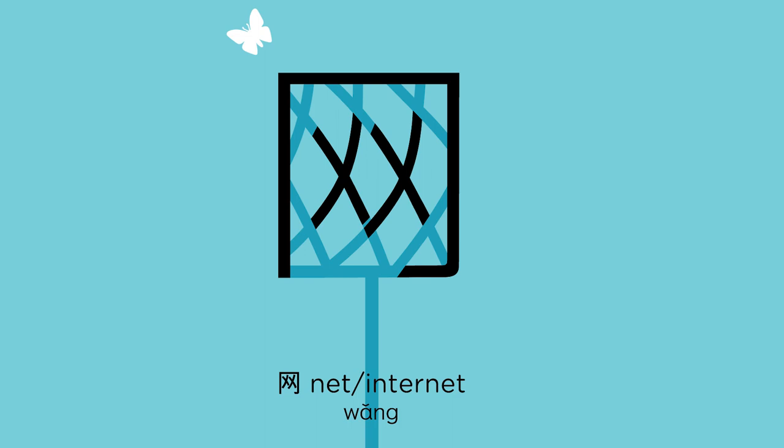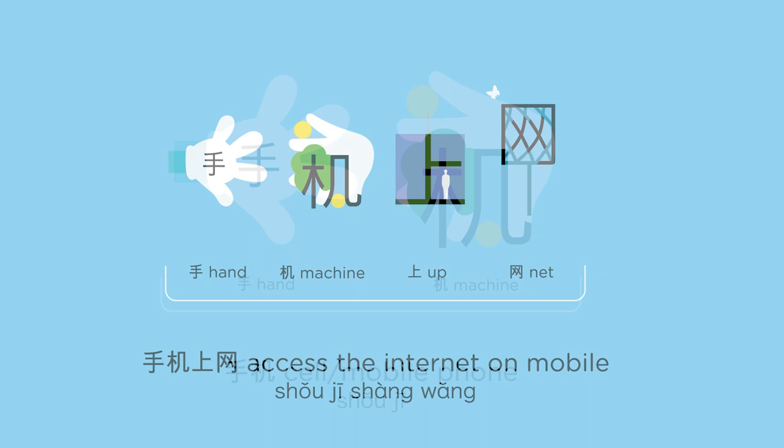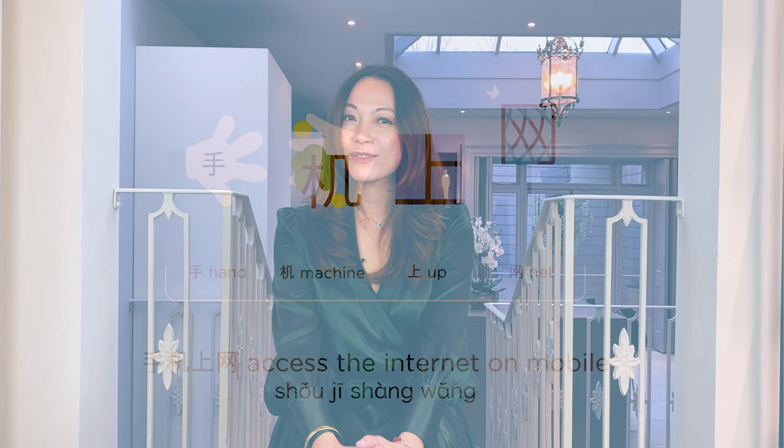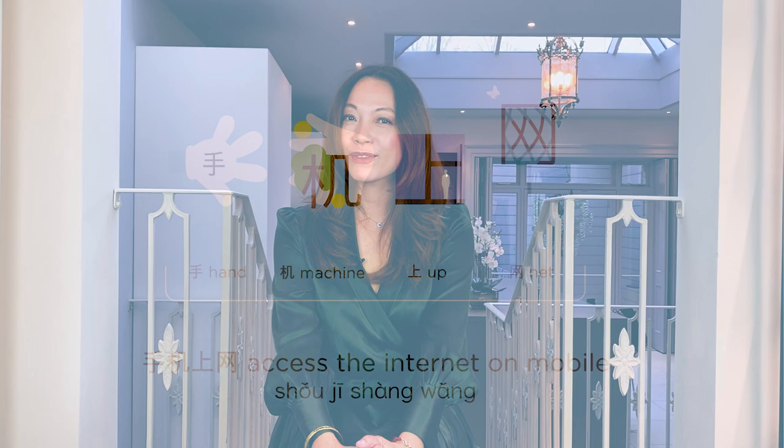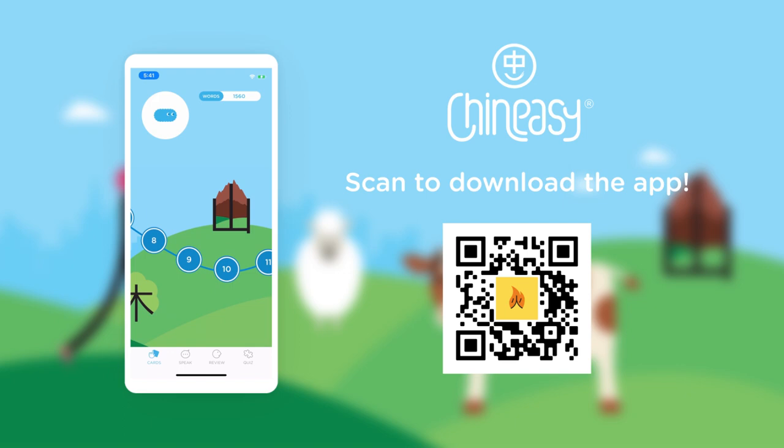So now we have learned how to say net — 网, that's the internet. To get online — 上网. Machine — 机. And your mobile phone — 手机. To get online with your mobile phone — 手机上网. Thank you very much, see you again soon. Don't forget to download our app, ChineseE, available on iOS or Android. We have a lot more lessons. Thank you, bye bye.